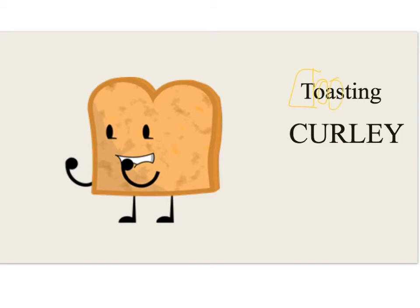A is for appearance, important when we look at chapter two. S is for speech — what they say and how they say it — relevant to how Steinbeck presents Curly. The final T is for thoughts and feelings; because Curly is a closed book and we have third-person narration, we never find out how he's really thinking. TOAST is a good way to remember how to look at a character and think about five important things that help develop characterization.